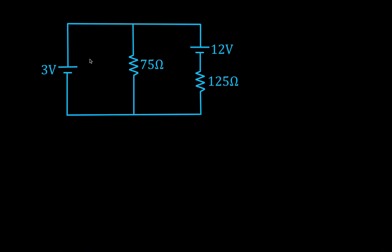Here's the circuit we're going to use for this video. We have a 3 volt source, a 12 volt source, a 75 and a 125 ohm resistor. We're going to determine the direction and the magnitude of the current in each of these branches.